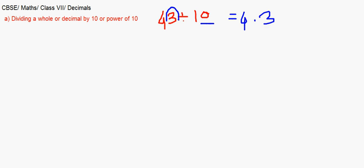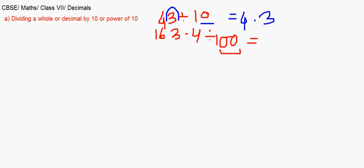Now take 163.4 divided by 100. Because there are two zeros, the decimal moves two places to the left, and the answer becomes 1.634.